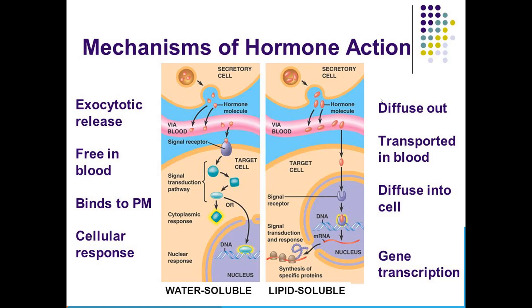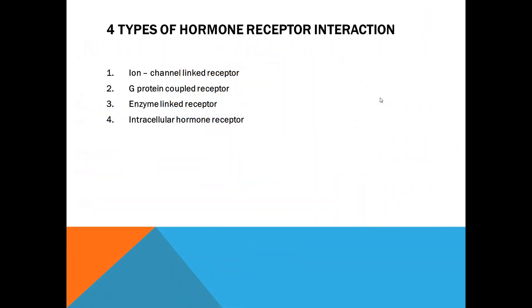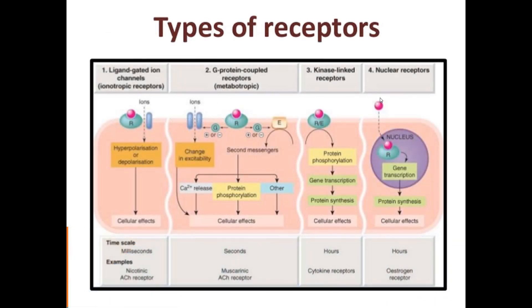Again, it's about mechanism of hormone action. There are four types of hormone receptor interactions: ion channel linked, G protein coupled, enzyme linked—Janus kinase for growth hormone, tyrosine kinase, serine kinase—and intracellular hormone receptor for steroids. This is very important and frequently asked in MCQ questions.